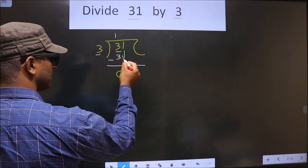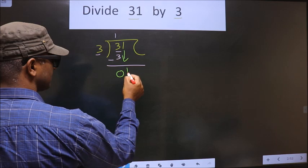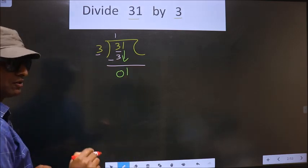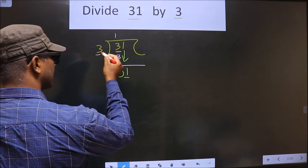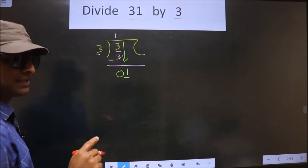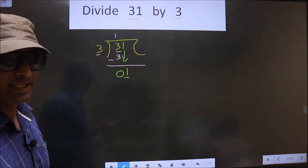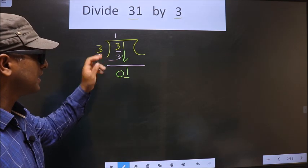Now you bring this number down, which is 1. Now here 1 is smaller than 3. So many do the mistake here only. 1 is smaller than 3.